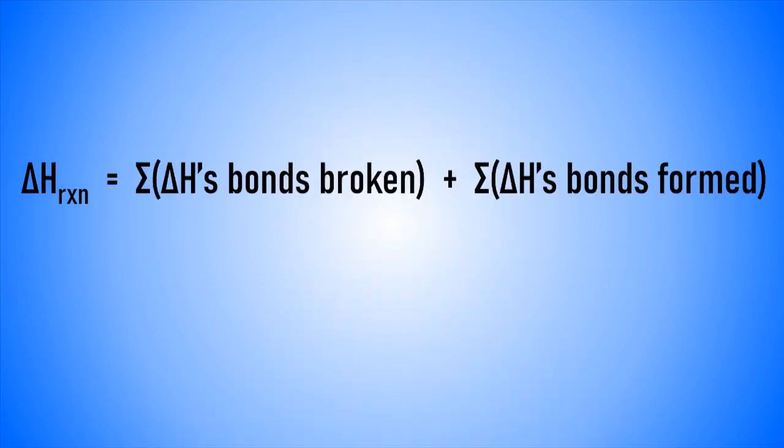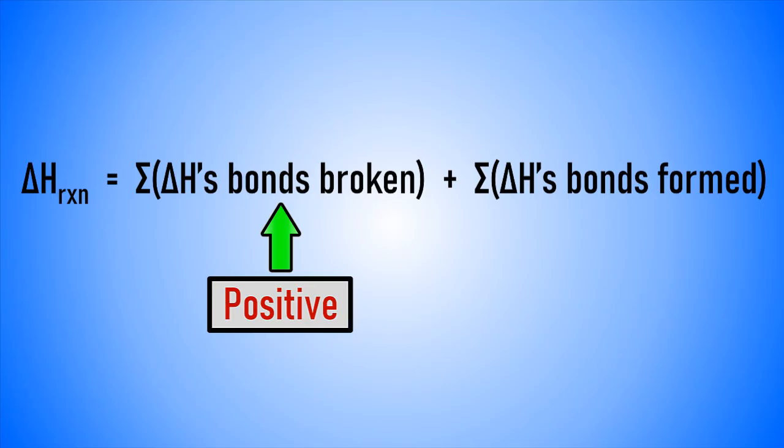From a bond energy standpoint, all this means is that the amount of energy released due to the formation of chemical bonds in the products was greater than the total amount of energy absorbed due to breaking of chemical bonds in the reactants. For those who like to follow a formula, the formula for calculating ΔH using average bond energies says that the enthalpy change is the sum of the average bond energies for all bonds broken combined with the sum of the average bond energies for all bonds formed — accounting for the fact that energies associated with bond breakage are always positive and energies associated with bond formation are always negative.